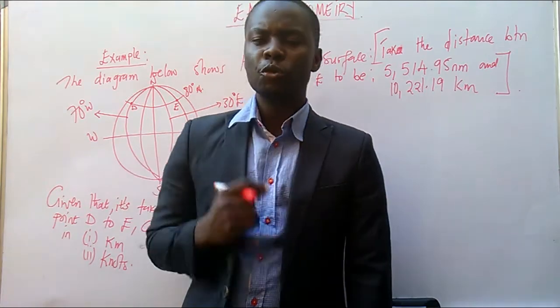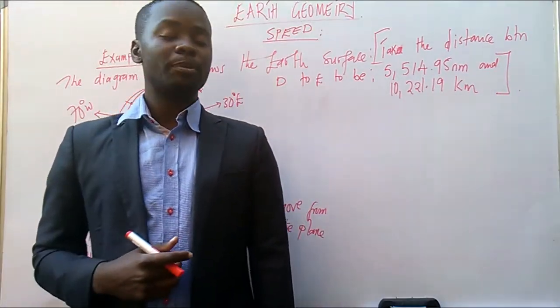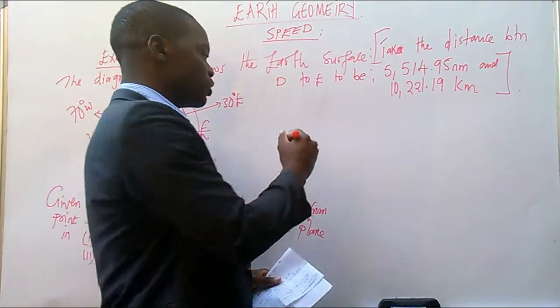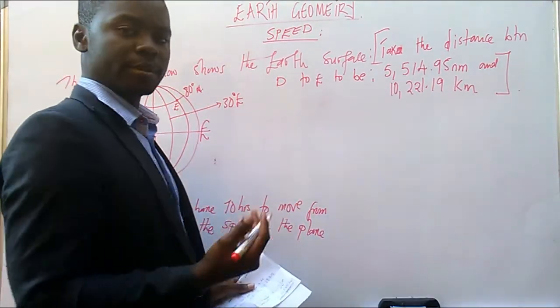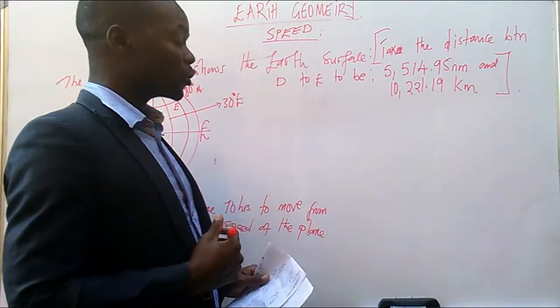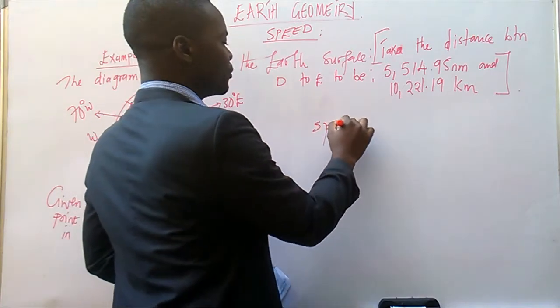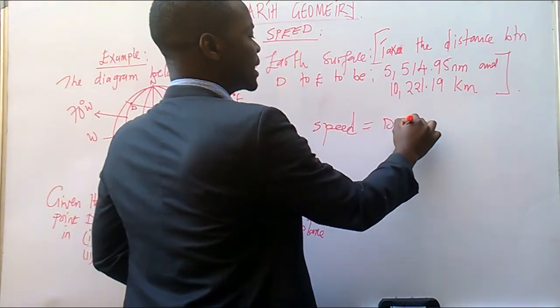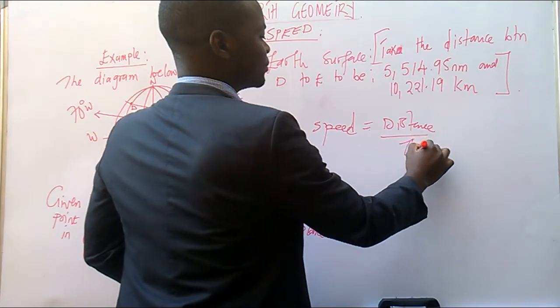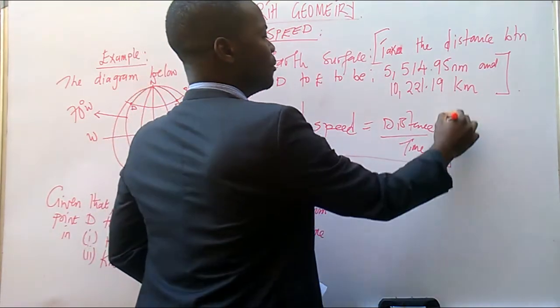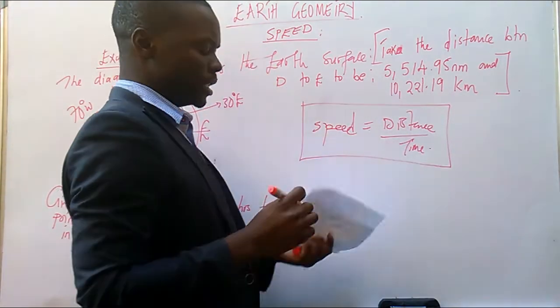Now the first thing which you must know is the formula for the speed. The formula for the speed is a formula which we know under physics and any concept of calculation as far as speed is concerned. Speed is equal to distance over time. So this is the formula to use when calculating speed.